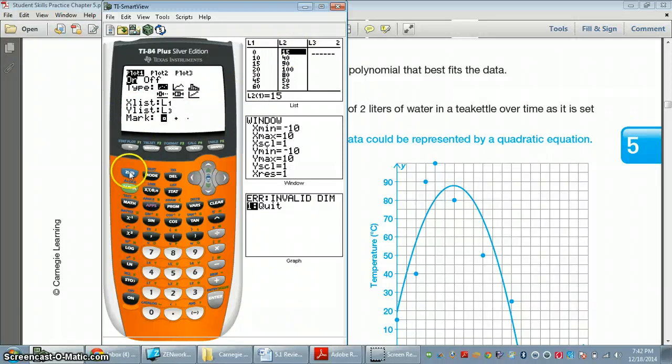And our y list happens to be in list 2. So I have to change this. And the way that I change it is, if you notice, above my number 2 is a little L2. So I just do 2nd, number 2, and that's L2. And then what happens is, if I just hit graph,